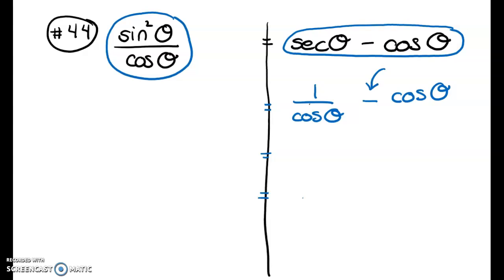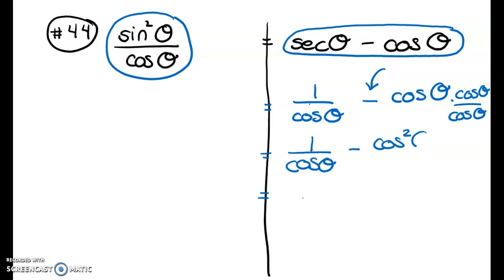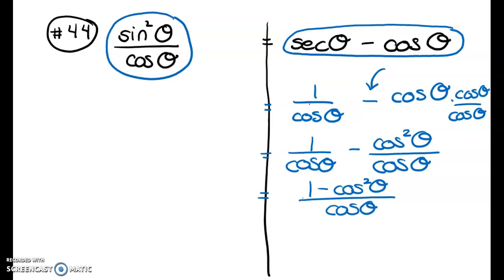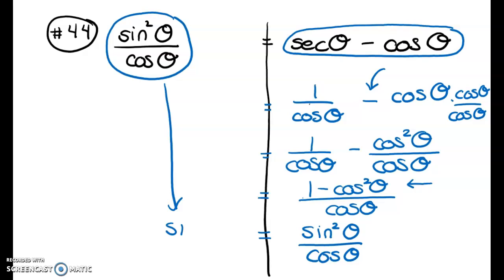I find a common denominator of cosine θ, and rewrite cosine θ as cos²θ/cosθ. Combining into one fraction gives (1 − cos²θ)/cosθ. Using the Pythagorean identity, 1 − cos²θ = sin²θ, so I get sin²θ/cosθ — the same expression on both sides. The verification is complete.